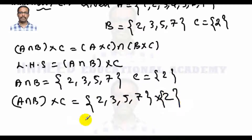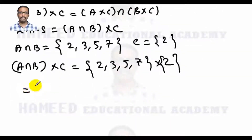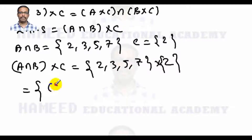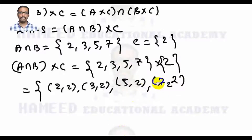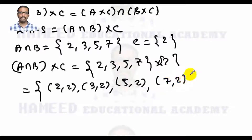Computing the Cartesian product (A ∩ B) × C: we get the ordered pairs (2,2), (3,2), (5,2), (7,2). So the left-hand side equation 1 is {(2,2), (3,2), (5,2), (7,2)}.